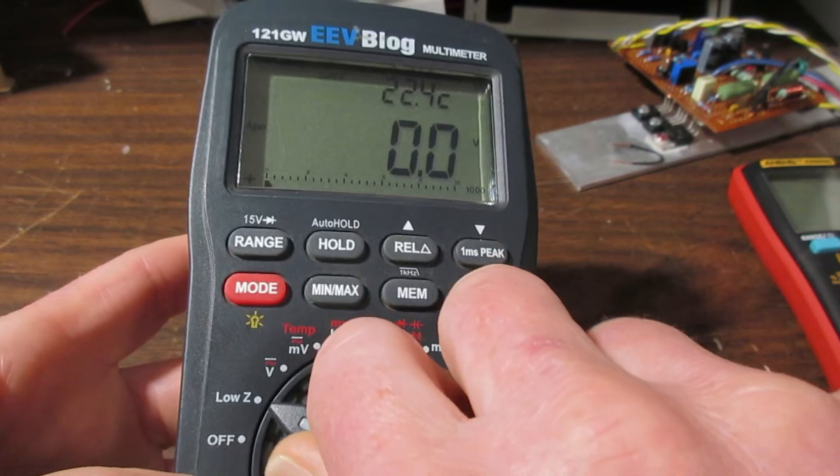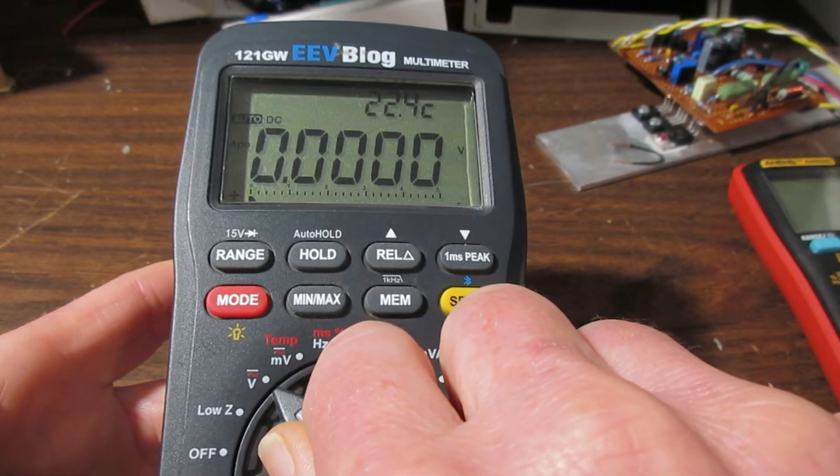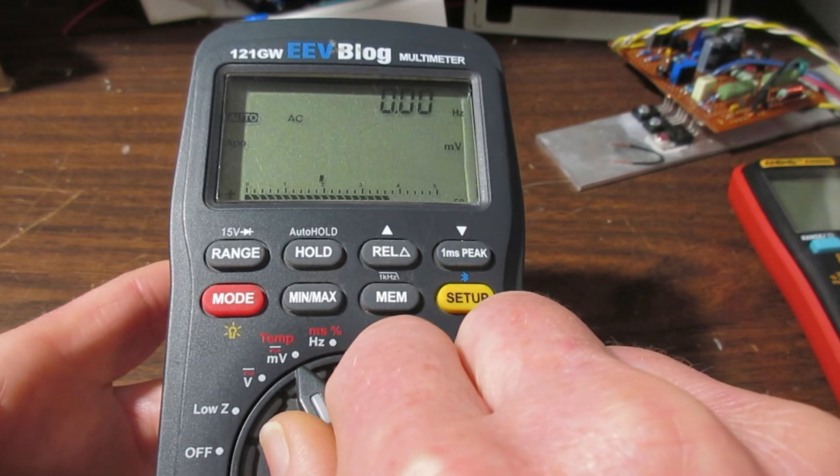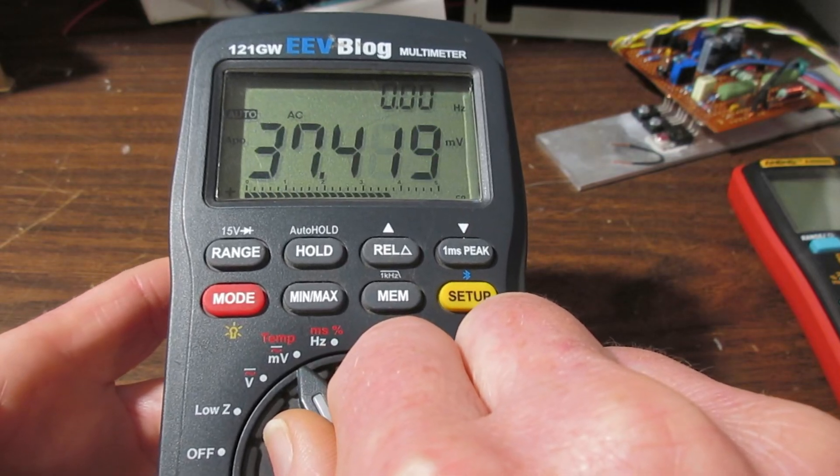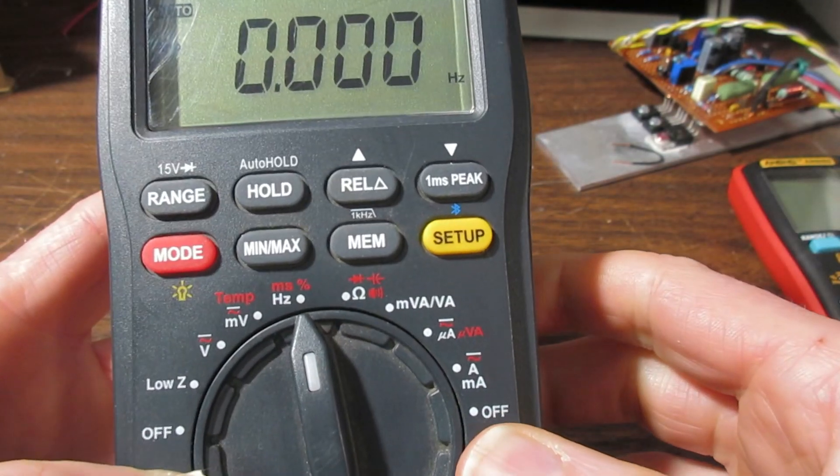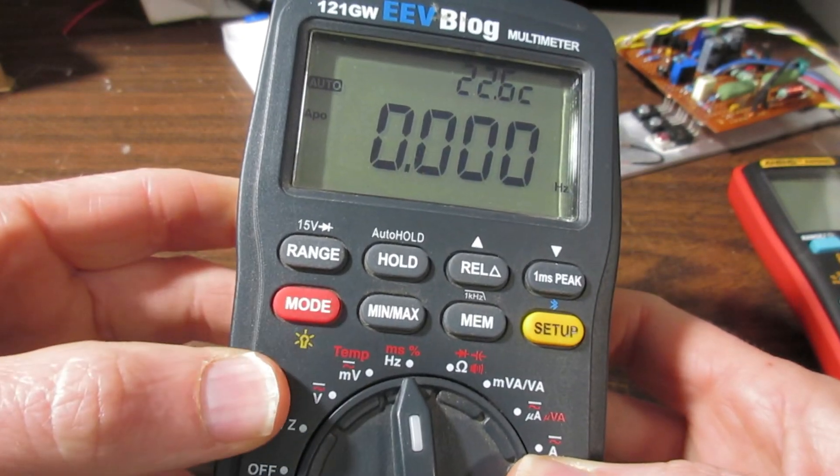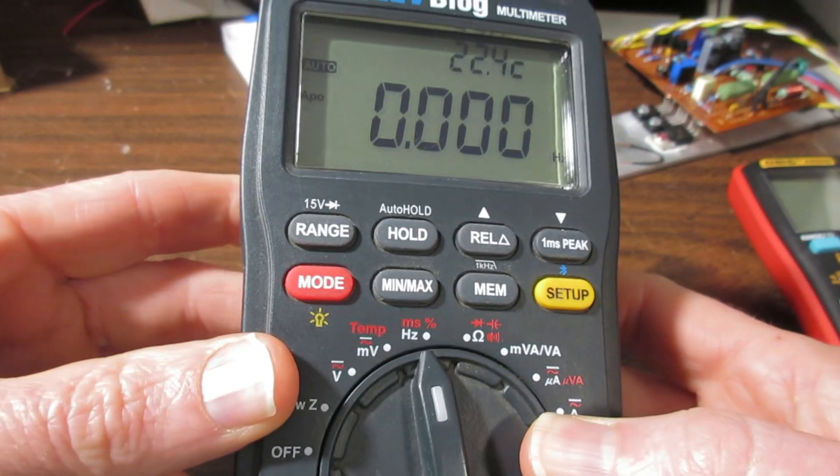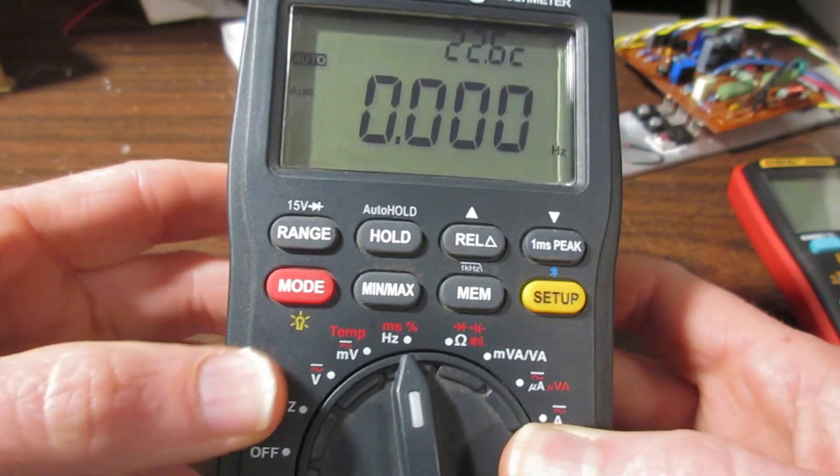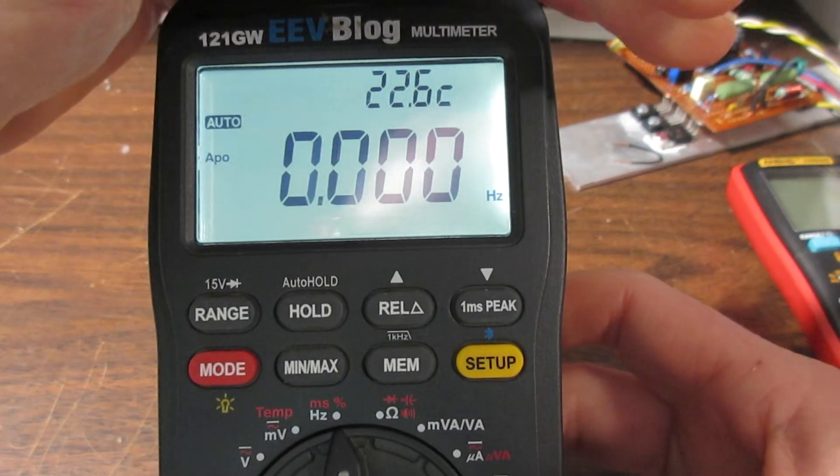I guess that thing it flashed up is probably the firmware. So we've got a low Z mode, voltage has a millivolt range, hertz. I'm not going to go through everything here, but it seems to have a lot of functions. Light - it's got a nice light there.